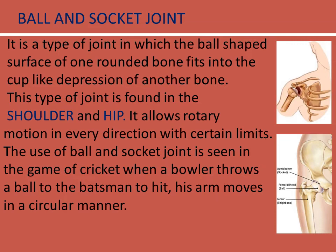Ball and socket joint: it is a type of joint in which the ball-shaped surface of one rounded bone fits into the cup-like depression of another bone. This type of joint is found in the shoulder and hip. It allows rotary motion in every direction within certain limits.